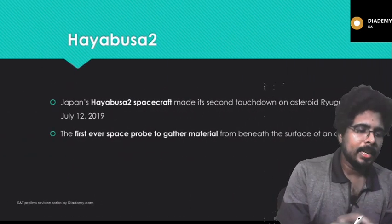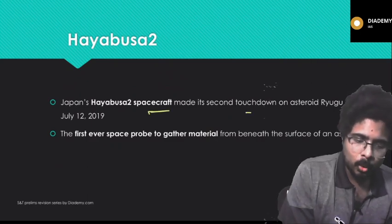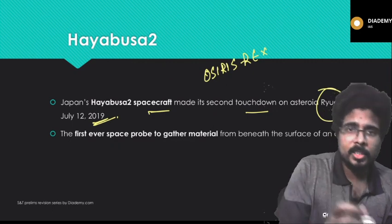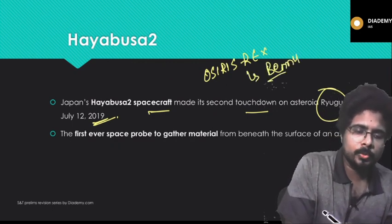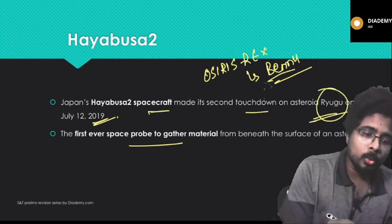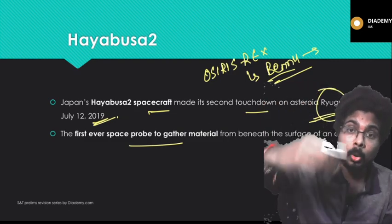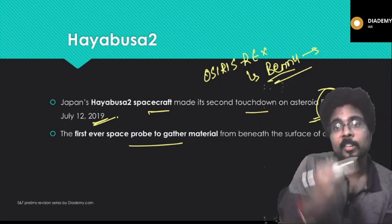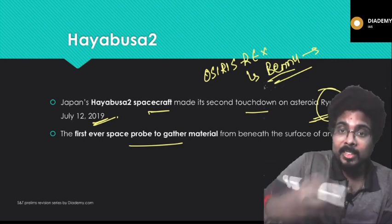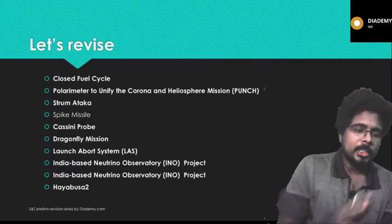Hayabusa2 is the Japanese spacecraft — 'hayabusa' is the Japanese word for a type of bird. It made its second touchdown on asteroid Ryugu on July 12, 2019. NASA's OSIRIS-REx studies asteroid Bennu, while Hayabusa2 studies asteroid Ryugu. This is the first-ever space probe to gather material from beneath the surface of an asteroid — it actually landed on the asteroid to collect subsurface samples for research.